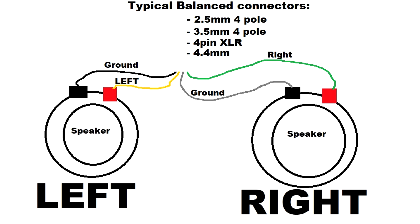But in the balanced version, a jack is used with four contacts, whether it is a 3.5mm 4-pole, 4-pin XLR, 2.5mm 4-pole, or 4.4mm 5-pole connector. They all have at least four contacts or wires.